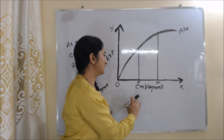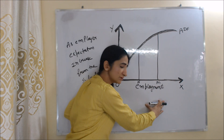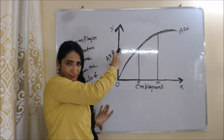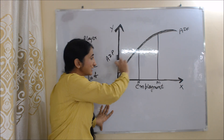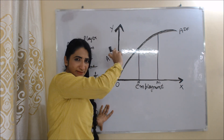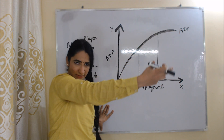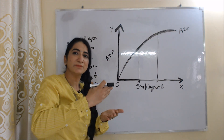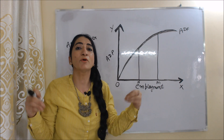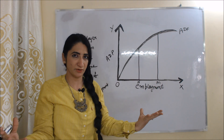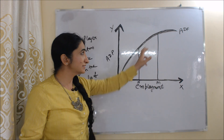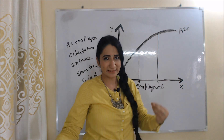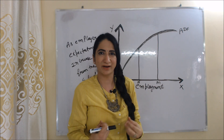In this diagram, you can see on the x-axis we have employment and on the y-axis we have aggregate demand price. As aggregate demand price is increasing, our employment is also increasing. So we can say that aggregate demand price and employment both have a positive relation. This is our aggregate demand function curve — in short, the ADF curve.